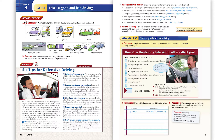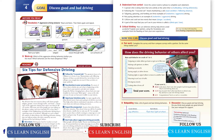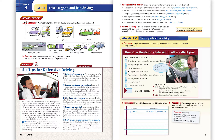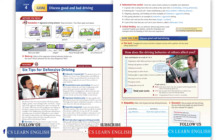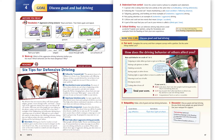Page 46. Before you read, Exercise A: Vocabulary — Aggressive Driving Behavior. Read and listen: stare, gesture, honk, flash your lights, tailgate, weave through traffic, cut someone off.